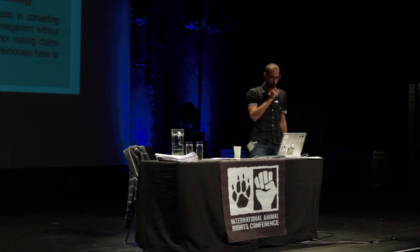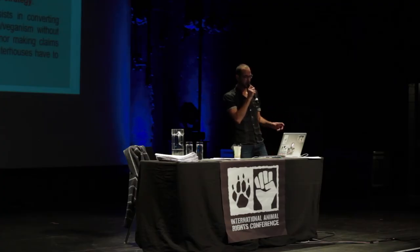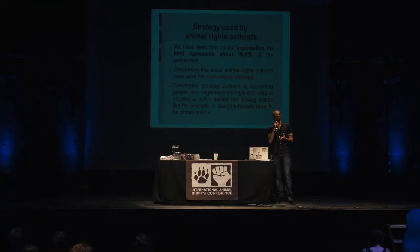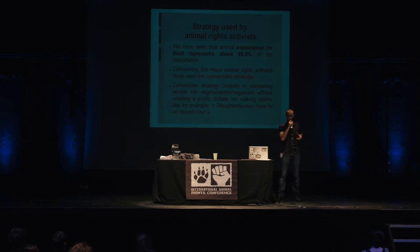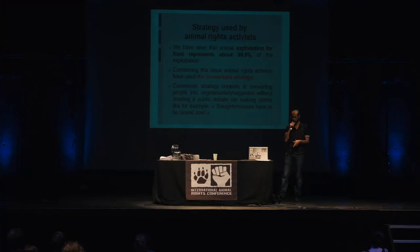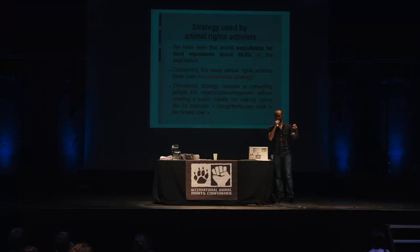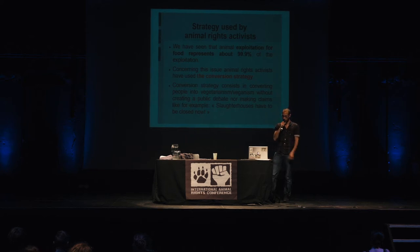Animal exploitation for food represents 99.9% of all animal exploitation. The strategy that animal rights activists have used to address this is what I call the 'conversion strategy.' The difference from the social movement strategy is that instead of expressing a claim — for example, 'slaughterhouses have to be closed now' — the animal rights movement has used the conversion strategy, which aims just to convert people to vegetarianism or veganism, creating individual changes one by one, rather than creating a societal debate to achieve abolition of animal exploitation.